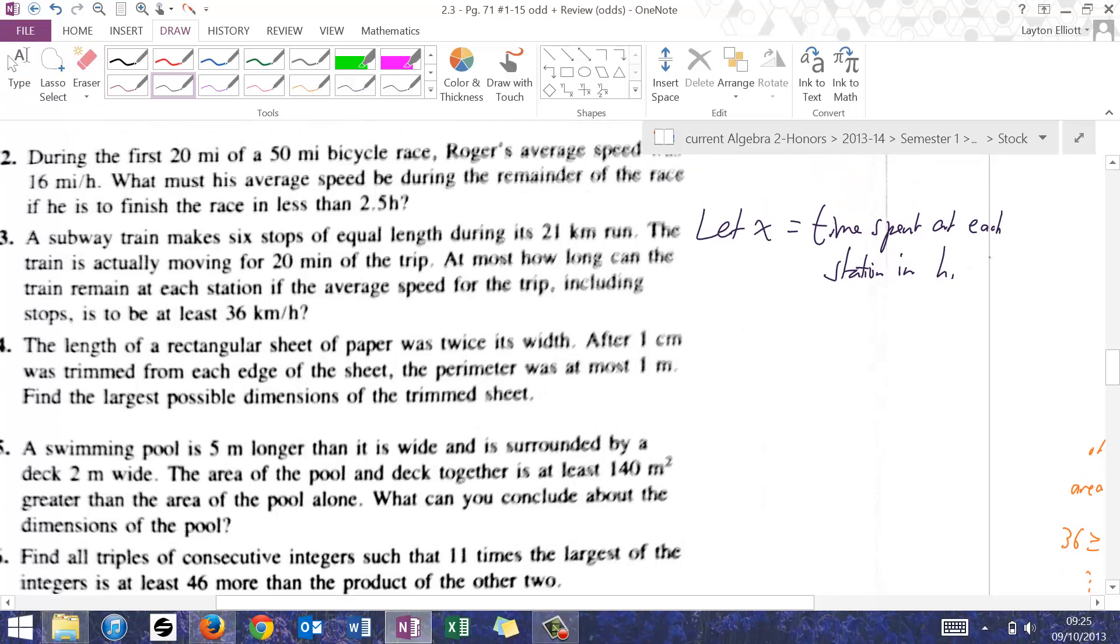I'm going to start by saying let x equal the time spent at each station in hours, which means the whole problem has to be in hours. The question says, at most how long can the train remain in each station if the average speed for the trip, including stops, is at least 36 kilometers per hour?